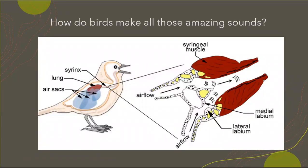How do birds make all these amazing sounds? Sound production, specifically songs, comes from a specialized organ called the syrinx, which is located in the body cavity. Birds don't have vocal cords like we do — they have this specialized organ called the syrinx. The simplified explanation of how sound is produced is that there are two bronchi.